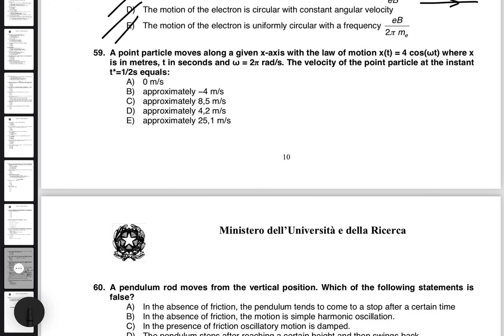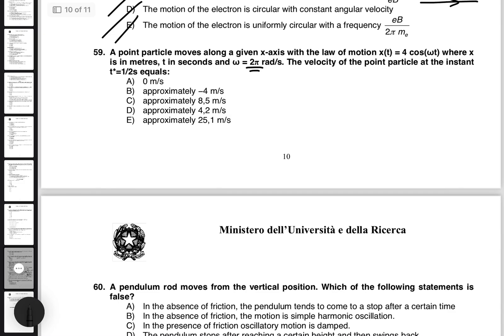All right, question 59. It's actually a quite interesting question. It's not difficult at all if you know a little bit of simple harmonic motion. It's saying that we have this function for a particle that is moving according to the laws of motion, where x is in meters and omega is 2π. The velocity of the point at this instant is what they want, right? What you have to do is you have to take the derivative of this function.